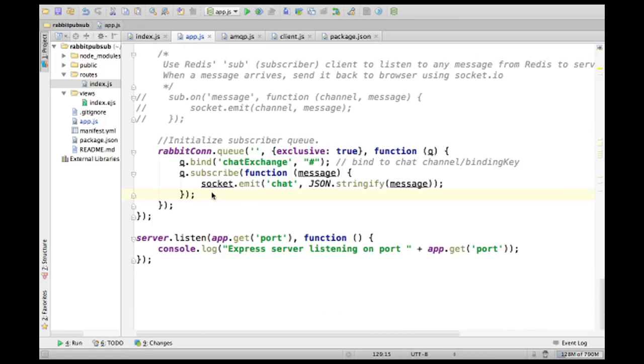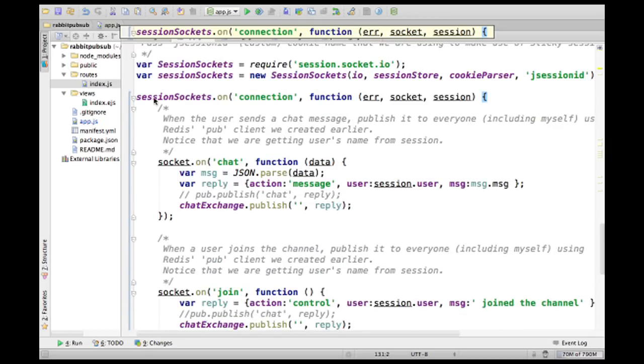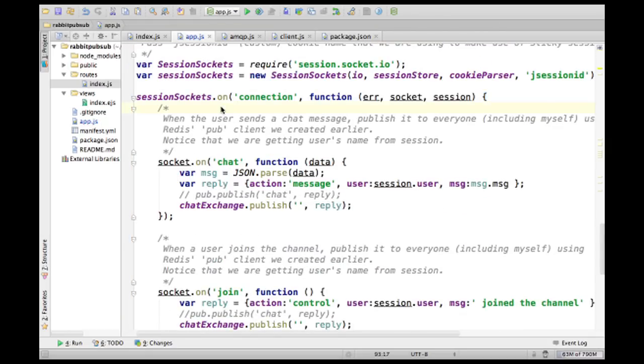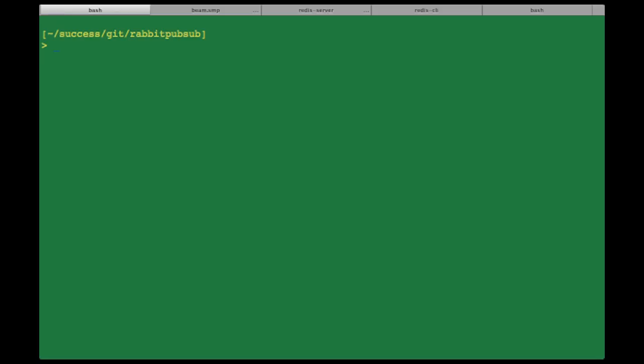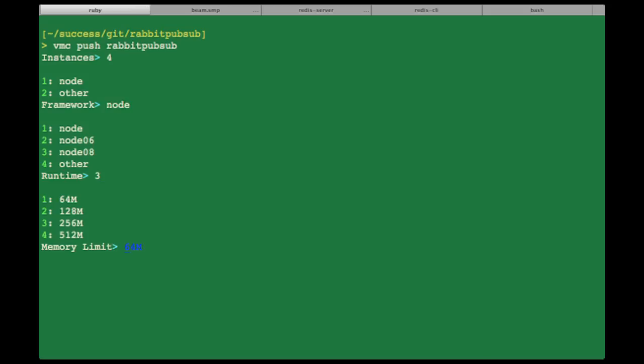One important thing to notice here is this whole creating of queue and binding and subscribing is actually done within sessionSockets.on connection, which means every time a Socket.io connection is open, we create a queue for that specific socket. Otherwise we will end up sharing the same queue with multiple browsers. Let's push this to Cloud Foundry.